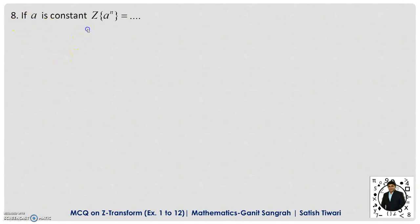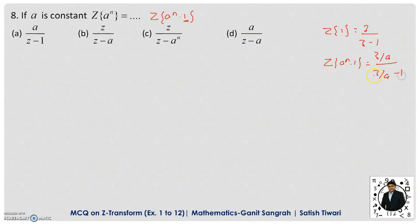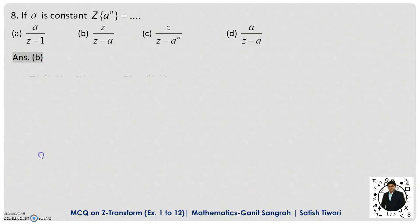Question 8: If A is a constant, then the Z-transform of A^n is given by Z/(Z−A). This can be calculated using the definition or the damping rule. We write A^n as (Z/A)^(−n) evaluated via Z{1} = Z/(Z−1), then replace Z with Z/A: (Z/A)/((Z/A)−1) simplifies to Z/(Z−A). Therefore option B is the correct answer.